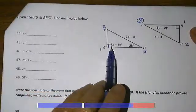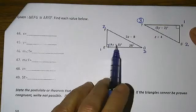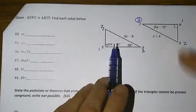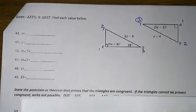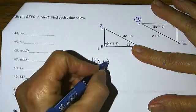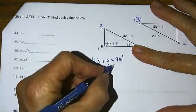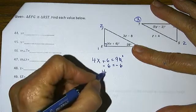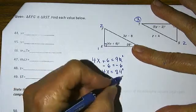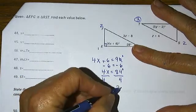We have to find the value of X. 4X plus 6 degrees equals 90 degrees. So my equation is 4X plus 6 is equal to 90. Subtract 6 from each side: 4X is equal to 84. Divide both sides by 4: X equals 21.